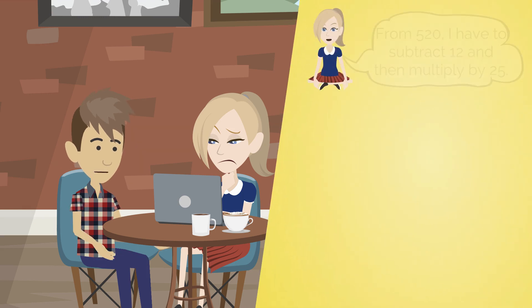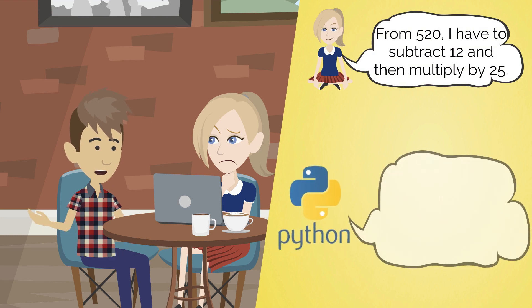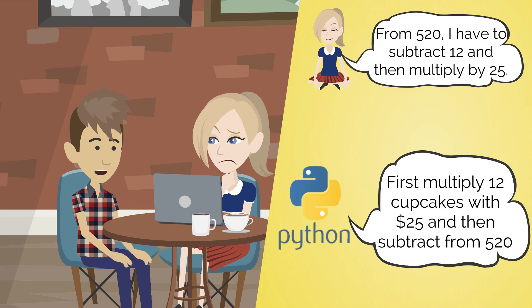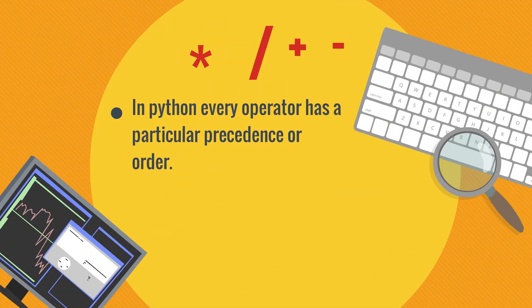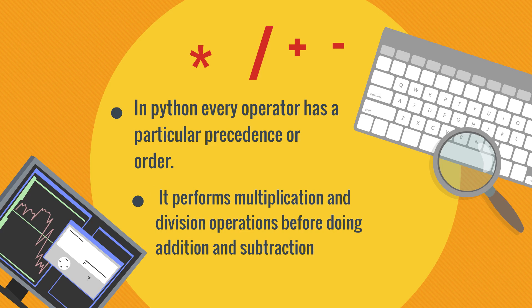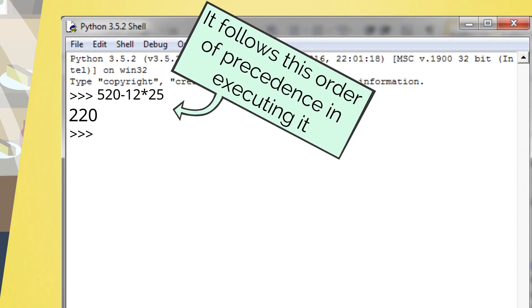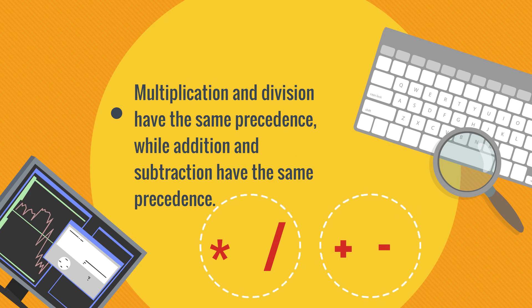You were right in subtracting 12 from 520 cupcakes before multiplying with $25. But how Python sees this is: first multiply 12 cupcakes with $25, and then subtract from 520. In Python, every operator has a particular precedence or order. It performs multiplication and division operations before doing addition and subtraction. Multiplication and division have the same precedence, while addition and subtraction have the same precedence.